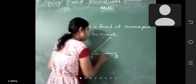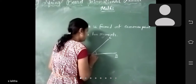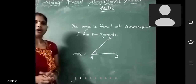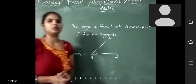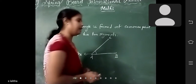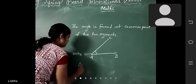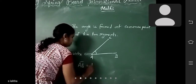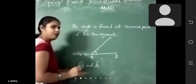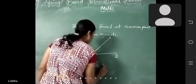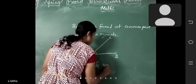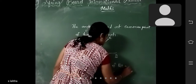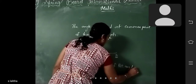And what do you call these? AB and AC. What do you call these two? Arms of the angle.